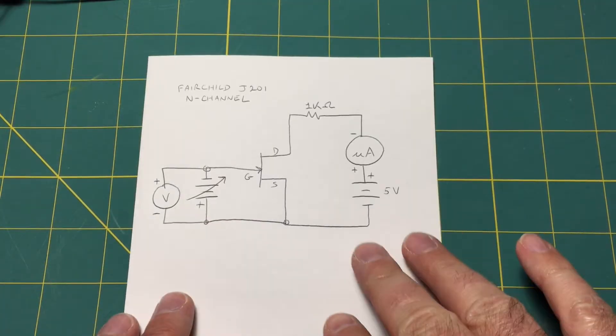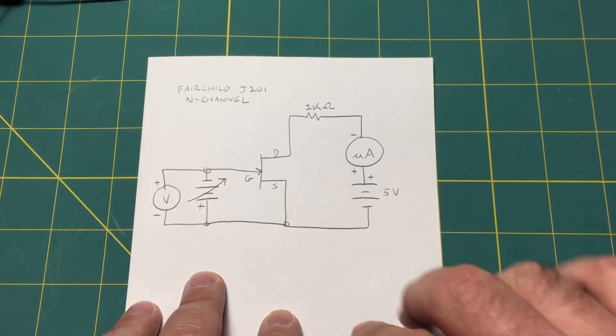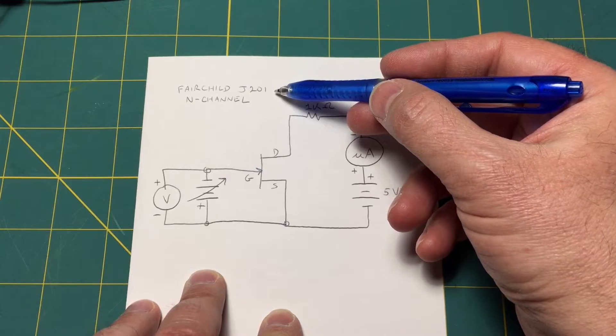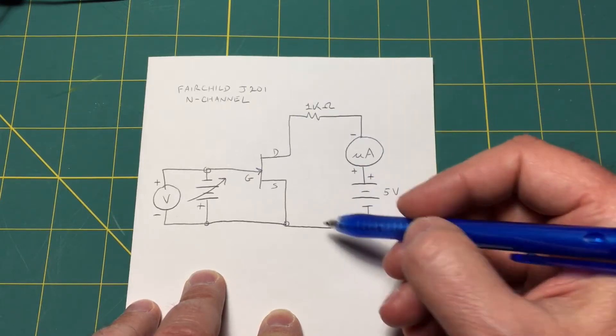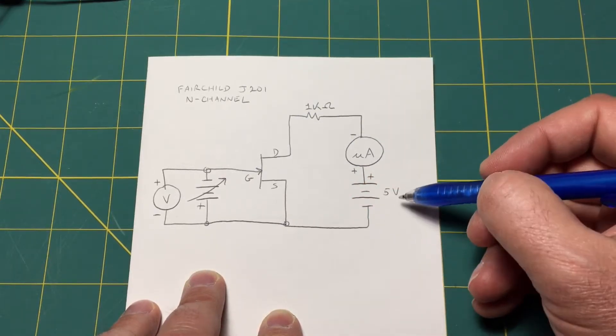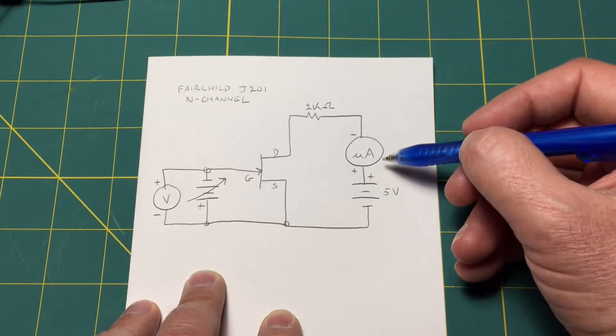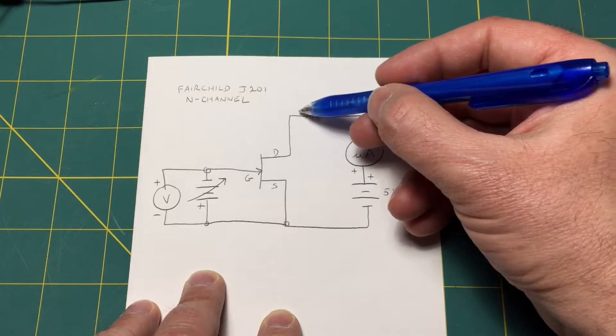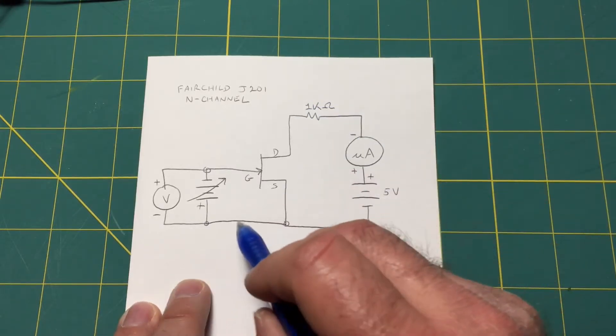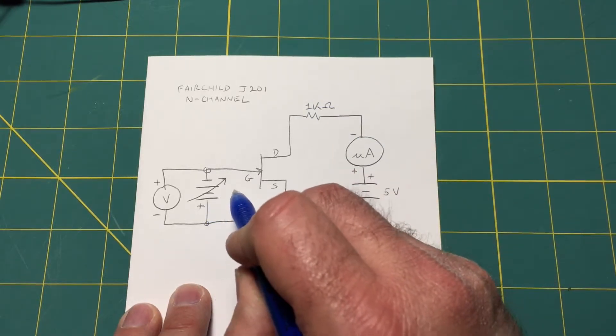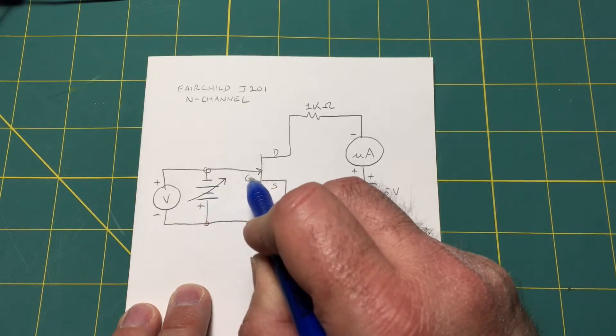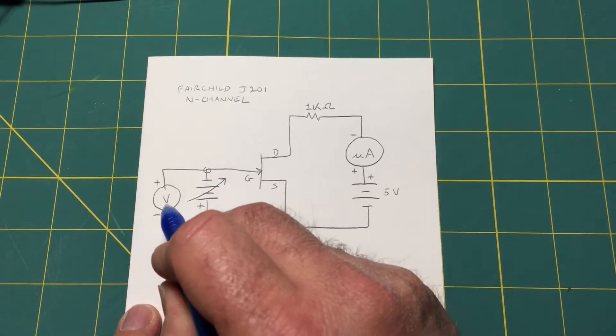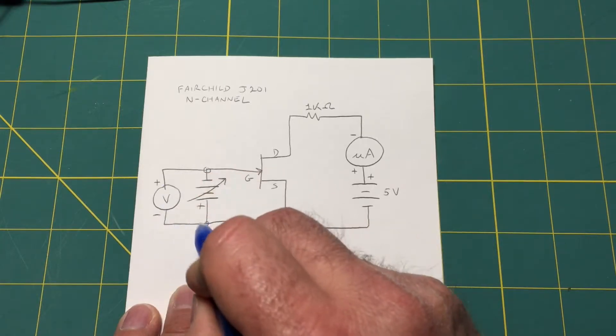This is the circuit we're going to use in our experiment today. I have a Fairchild J201 which is an N-channel FET. I have a fixed five volt power supply with an ammeter and I have a 1k resistor in the drain leg. I have a variable supply that will give a negative bias gate-to-source and I also have another meter measuring the gate voltage.